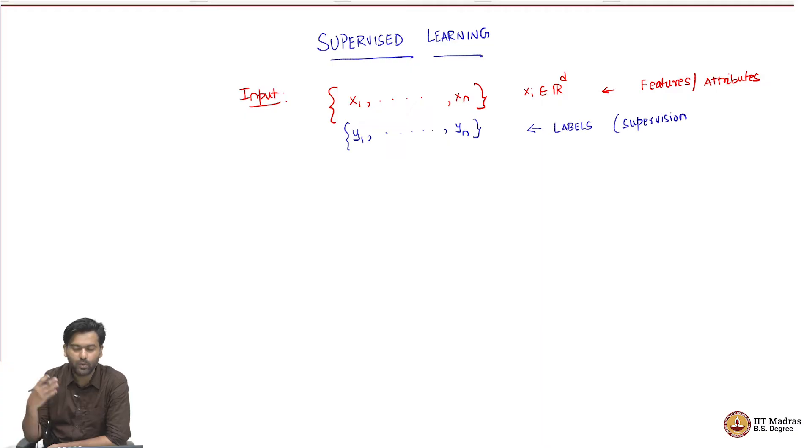This is why it is called supervised learning. In addition to just the data points, you also are given some kind of supervision. So what does it mean to say these labels are supervision? What values do these labels take?